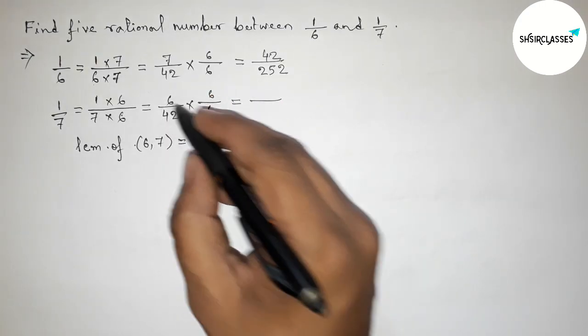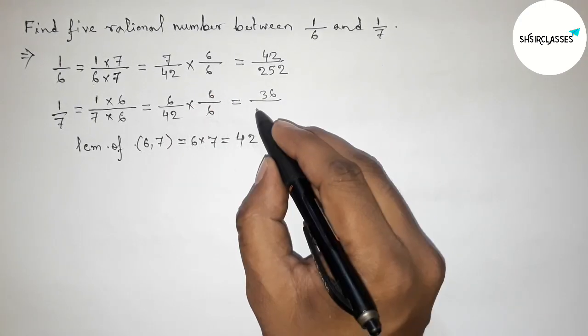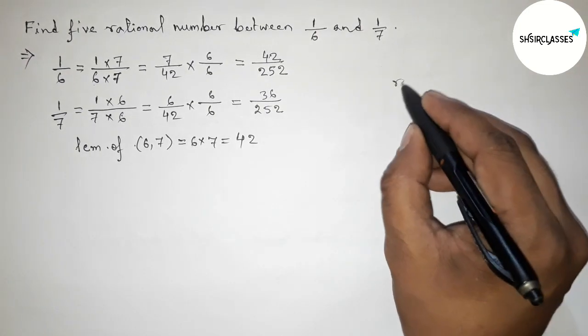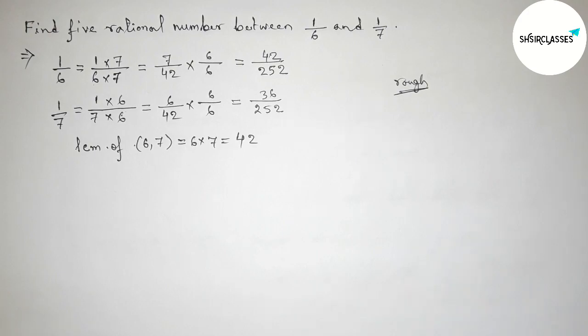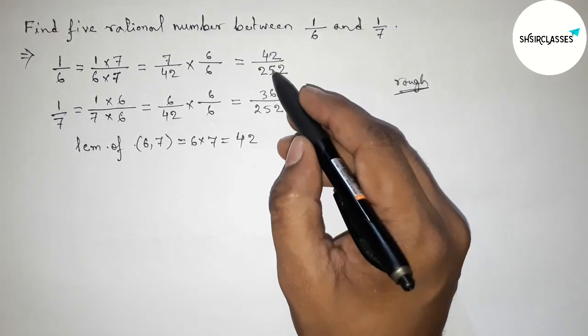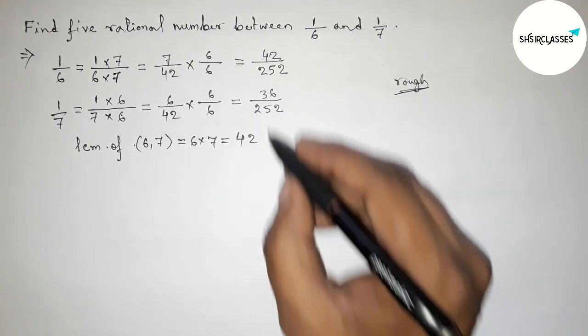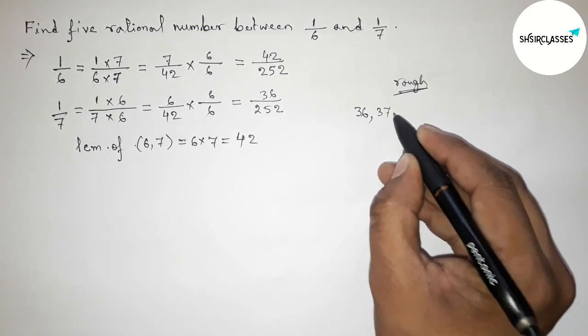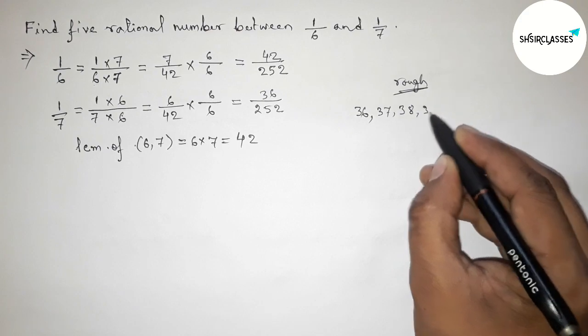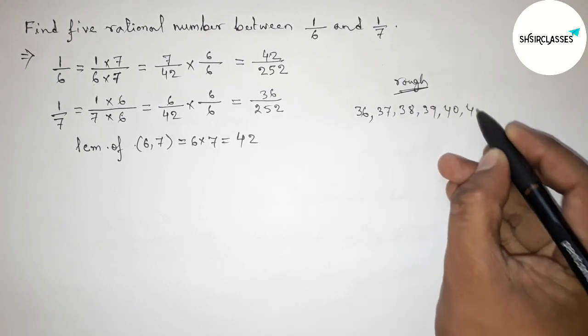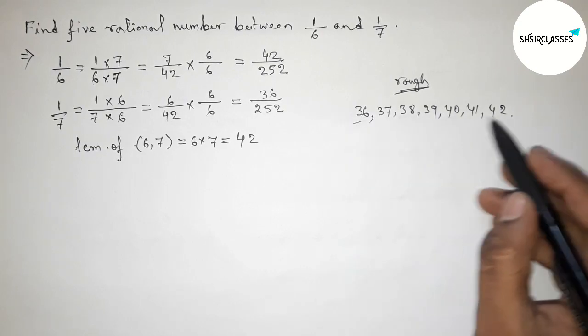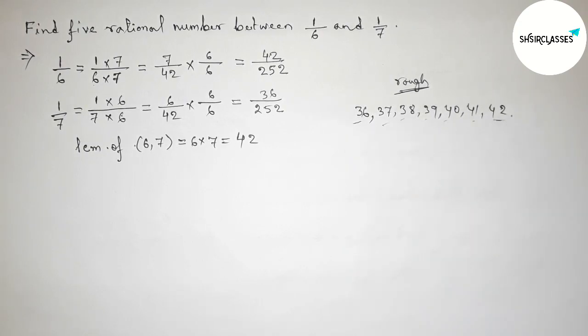Now both denominators are equal at 252. Between 36 and 42, we can get 5 integers. By these integers, we can form 5 rational numbers.